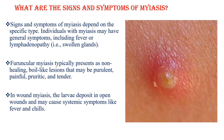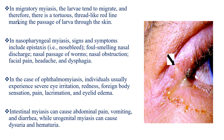In wound myasis, the larvae deposit in open wounds and may cause systemic symptoms like fever and chills. In migratory myasis, the larvae tend to migrate, and therefore there is a tortuous, cord-like red line marking the passage of larvae through the skin.